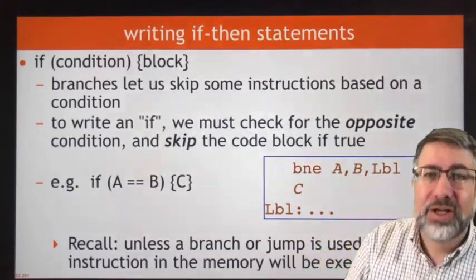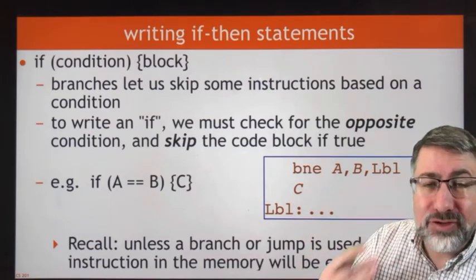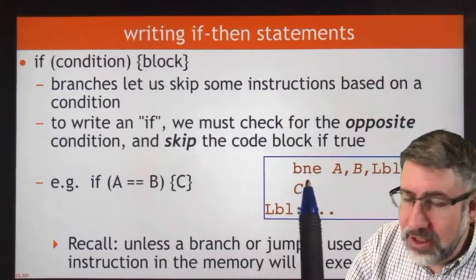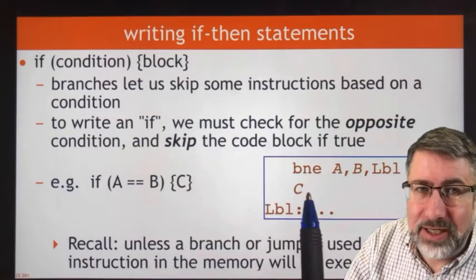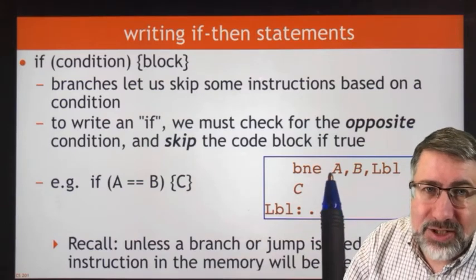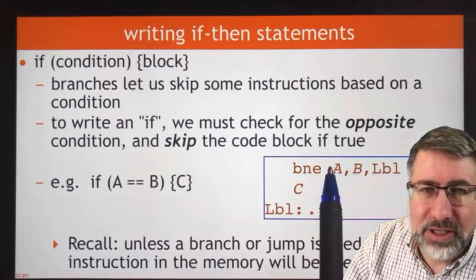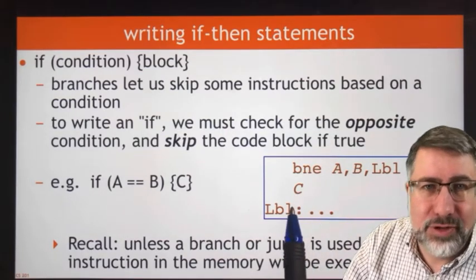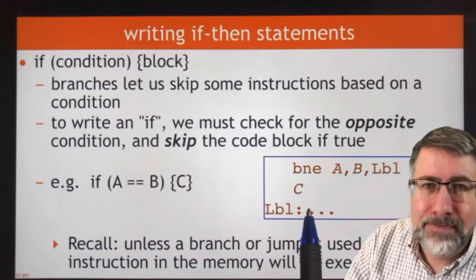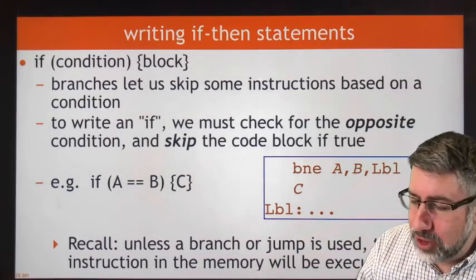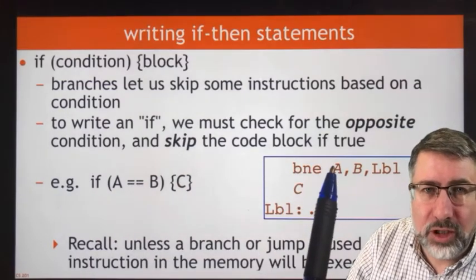We look at the opposite condition, but the program flow is the same. When you're executing a branch, if the branch fails, we just do the next thing in the list — so we don't need anything to say whether or not C gets done. The reason there's a label after C is that whatever else is after that gets done next, and the branch points you to the instruction after the conditional clause. So this conditional clause gets performed if A equals B, and gets skipped if A is not equal to B. The label for the branch is pointing to the next thing after the conditional clause.